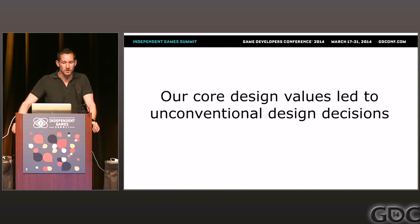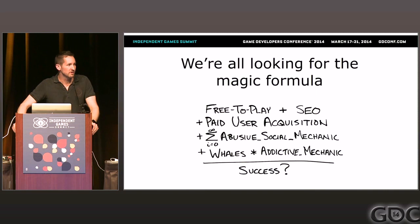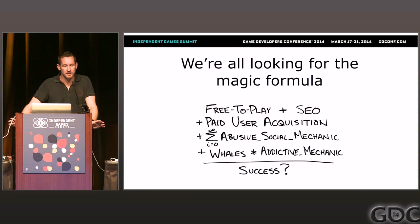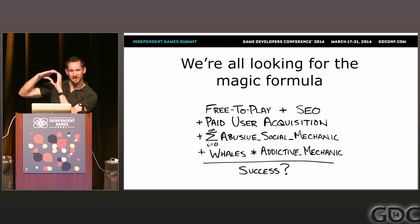Our core design values led us to make some unconventional design decisions. To frame this, I want to talk about the 'magic formula.' We all spend a lot of time looking at other games and trying to reverse-engineer their success — this is unfortunately why there are 60 new Flappy Bird clones a day on iPhone. Looking at the magic formula is absolutely a worthwhile activity, but there are things to be careful of. Once a niche has been exploited, it's unlikely you'll be able to make money on it the way the original exploiter did.